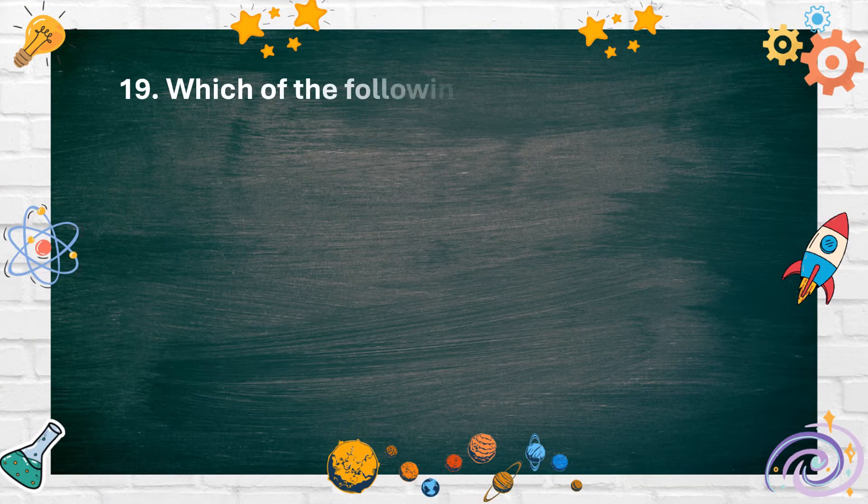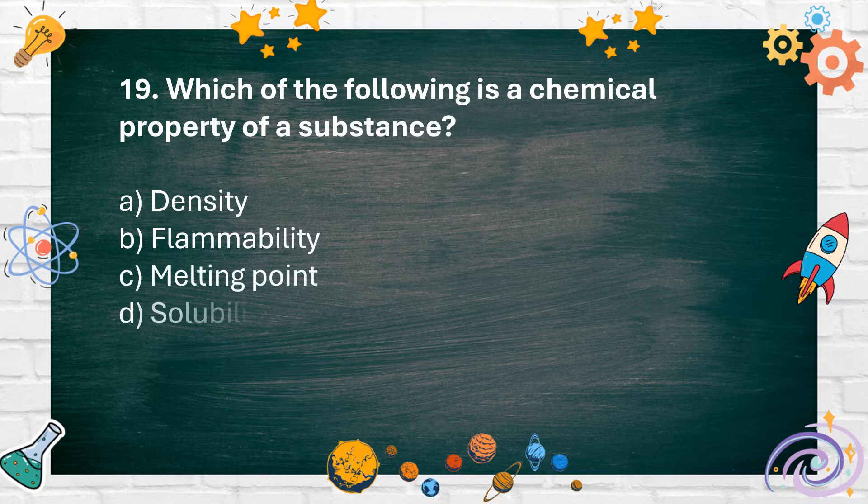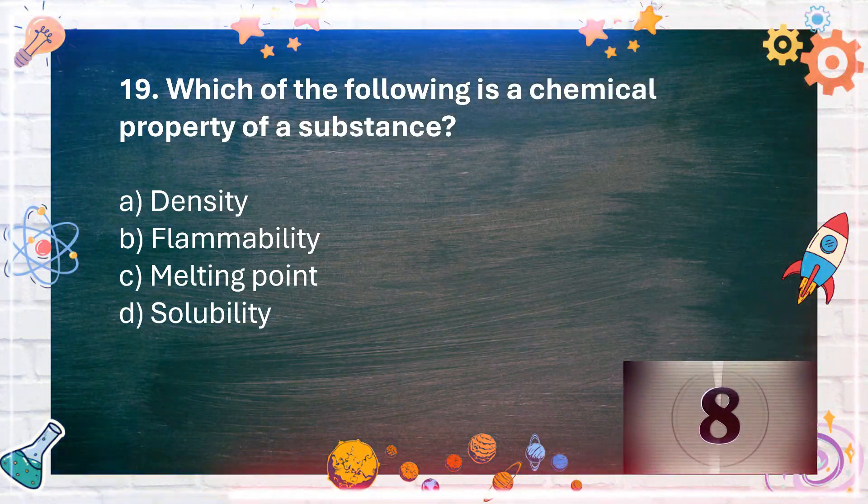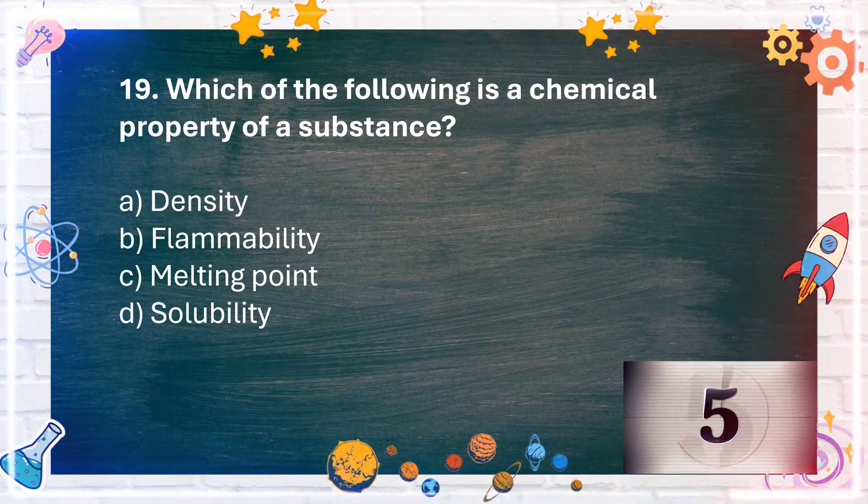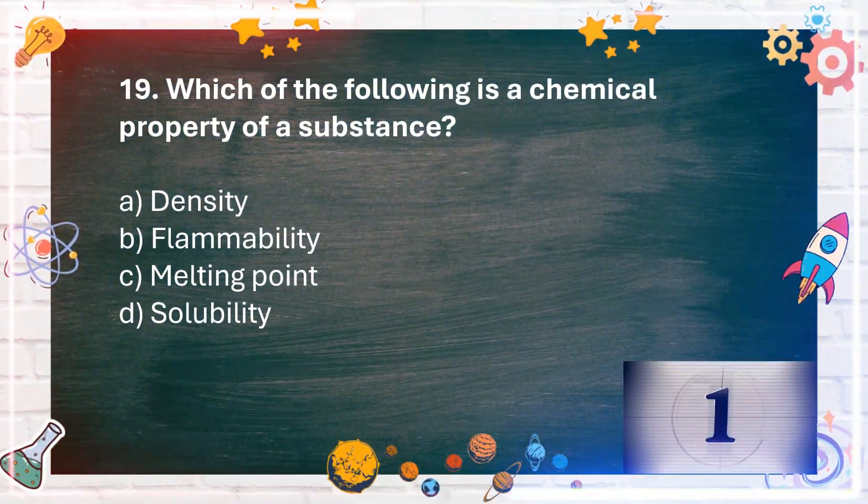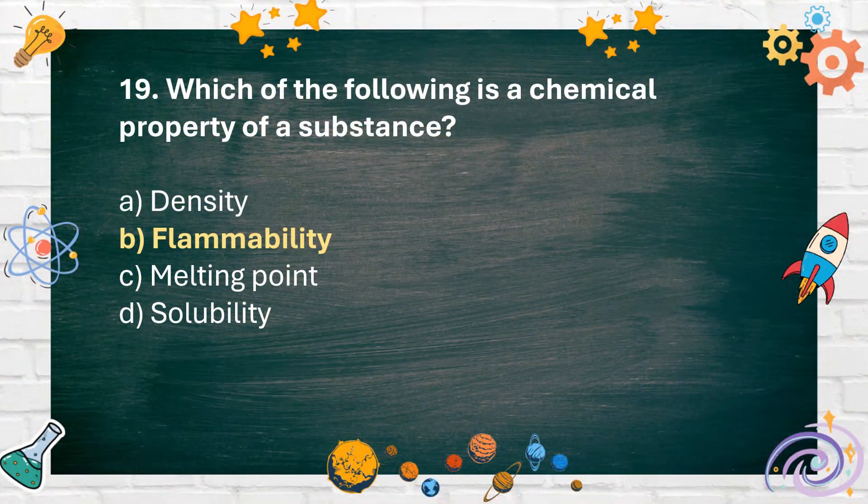Number 19: Which of the following is a chemical property of a substance? A. Density, B. Flammability, C. Melting point, D. Solubility. The answer is B. Flammability.